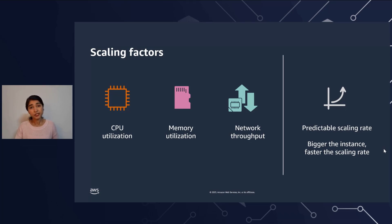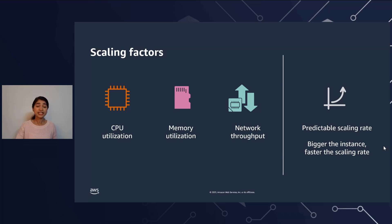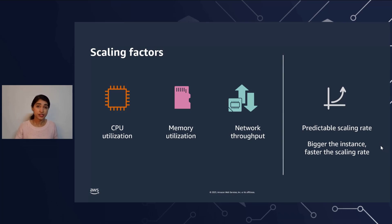The second factor that we take into consideration is memory pressure on your internal data structures — for example, the buffer pool. We make sure that if your database requires resources, we scale it up. The third factor is network throughput. Again, if your workload requires resources, we're going to scale the database up to provide it the resources that your workload requires.